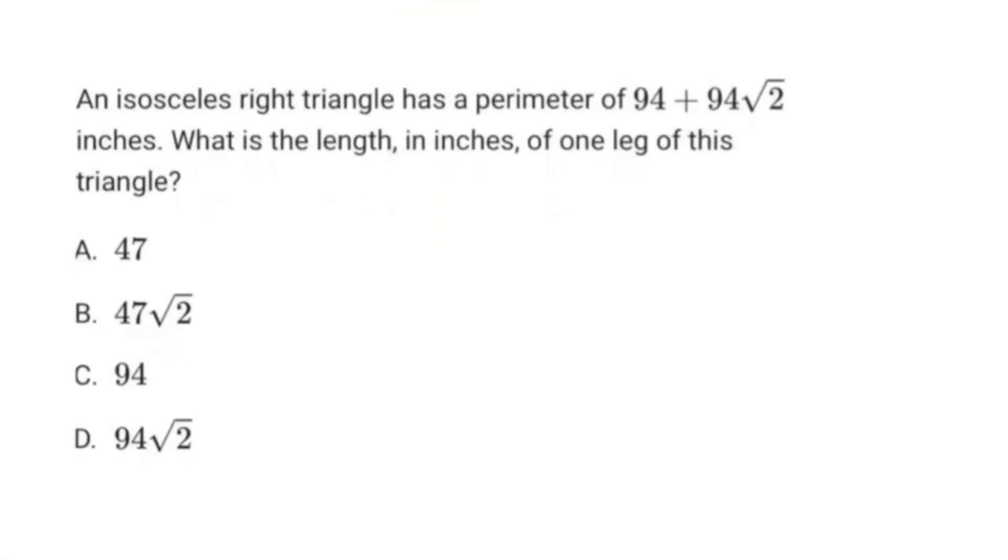All right, let's move on to our other math prediction for the SAT this month. This one has to do with geometry and isosceles triangles dealing with perimeter, and then extrapolating that to finding other features of the shape. So this problem says an isosceles right triangle has a perimeter of 94 plus 94 times square root 2 inches. What is the length in inches of one leg of this triangle?